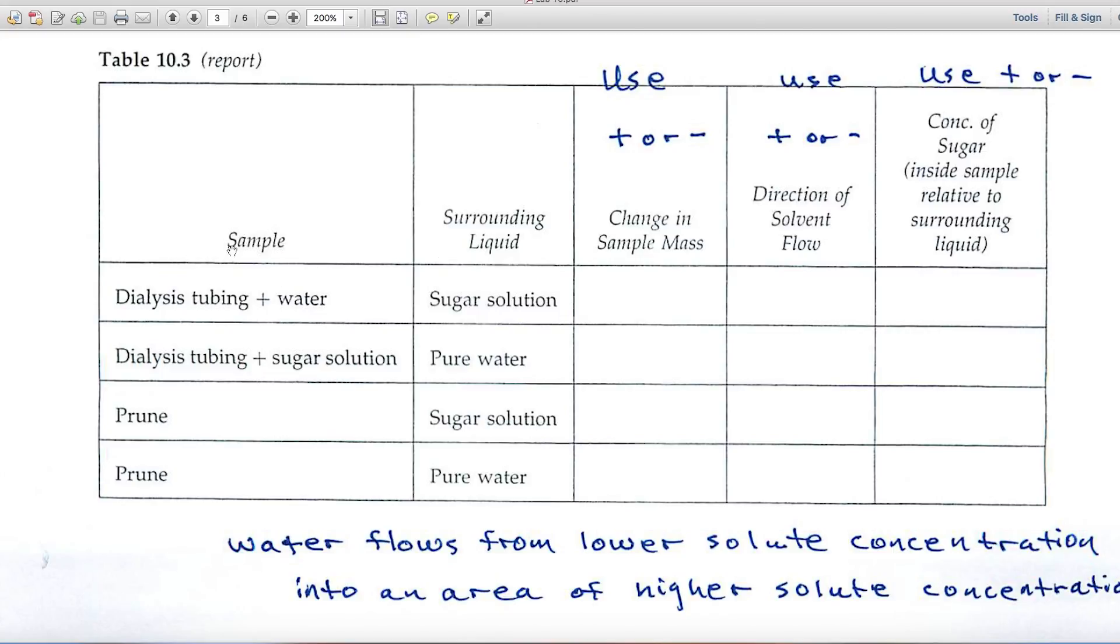And if it turns out that the dialysis tubing plus water has added mass, you would use a plus sign over here, the change in sample mass. If the sample weighs less, you use a negative sign. And the same for direction of solvent flow. If solvent or water is flowing into the sample, use a plus. And the same system over here, a plus, if it's flowing into the sample.